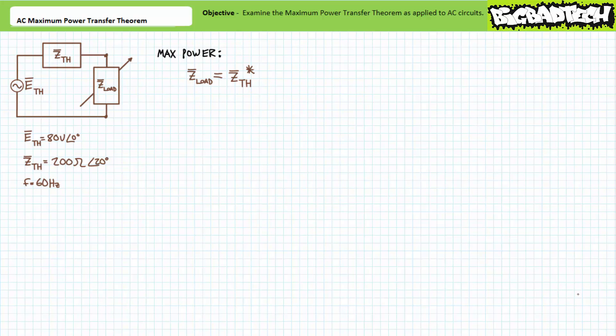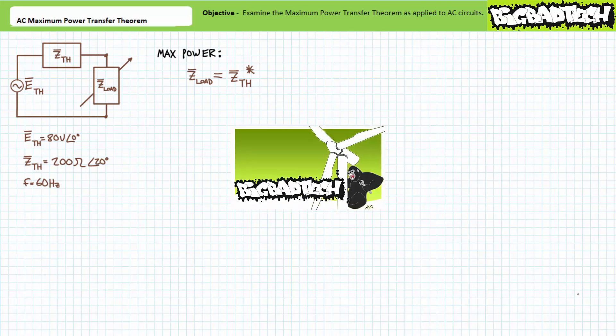Bottom line up front: AC maximum power transfer theorem is the DC maximum power transfer theorem with phasors. I cannot make it much simpler than that. This lecture operates under the presumption the viewer has more than a passing familiarity with both the maximum power transfer theorem as applied to DC circuits and AC power calculation, as illustrated in the DC maximum power transfer theorem and the AC power lectures available at the Big Bad Tech channel.